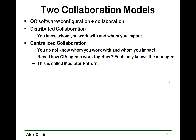For distributed collaboration, each object knows which object it works with. This is like in daily life where you know whom you work with and whom you impact if you do something. Centralized collaboration means that each object does not know whom they work with and also does not know which objects that it impacts.